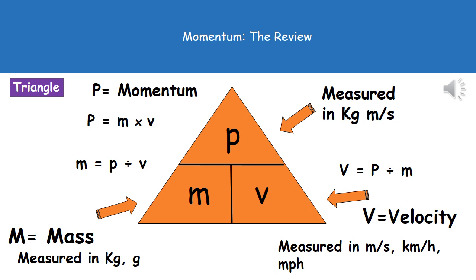To help us with rearranging this equation, we can put that into one of our triangles. So all we've got is, because it's mass times velocity, mass and velocity go on the bottom and momentum on the top. That'll then help you to make sure that no matter what they ask you to work out, you can rearrange it very easily.